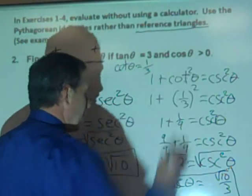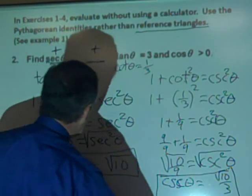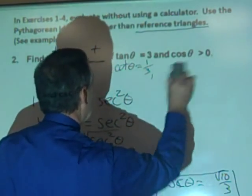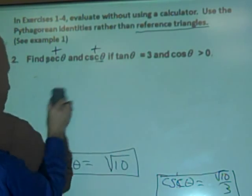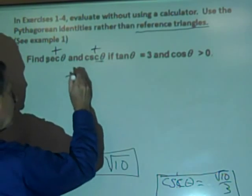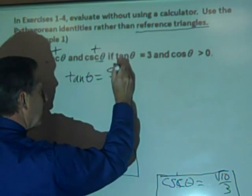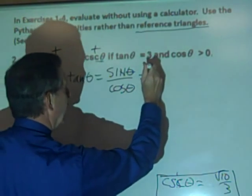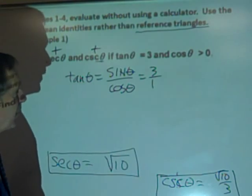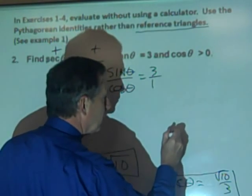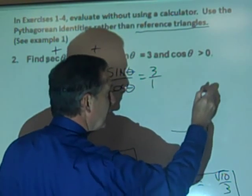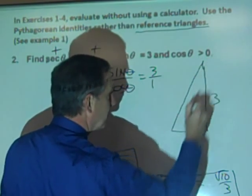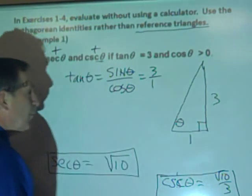As a check — rather than using reference triangles as instructed — let's verify our answers. Tangent theta equals sine theta over cosine theta, and with a tangent of three, sine and cosine occur in a three-to-one ratio. So in a reference triangle, the adjacent side is one and the opposite side is three.